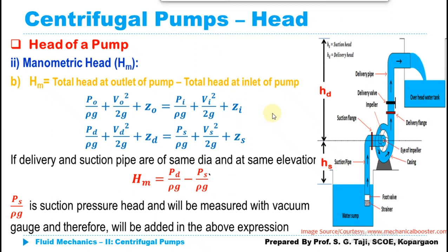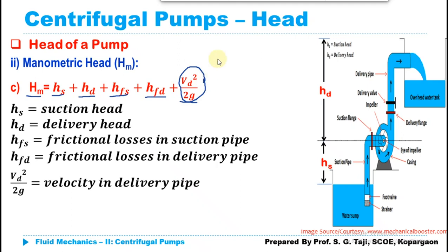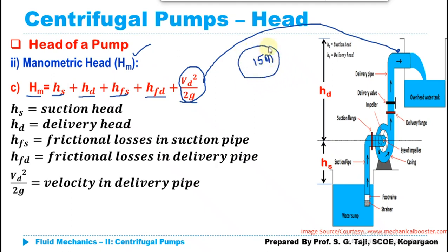Another expression for manometric head — by adding all heads — gives HM equals hs plus hD plus hFS plus hFD plus VD squared upon 2G, where VD squared upon 2G is the excess head available in the delivery pipe. These are the three expressions used to compute manometric head. Remember that manometric head is very important as it is used in computing efficiency — it is the head against which the pump is working. So when it is stated that a pump is working against a head of 15 meters, that value refers to the manometric head.